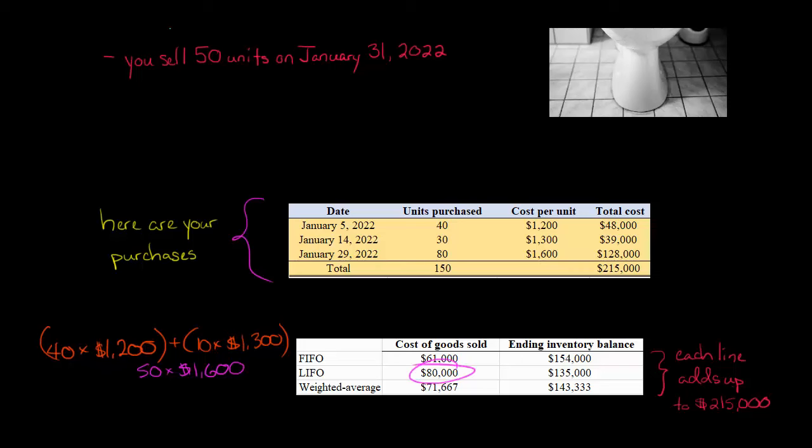Notice that cost of goods sold is higher with LIFO. It won't always be like that, but in this case, we are in a period of rising prices. It went from $1,200 to $1,300 to $1,600. When it is a period of rising prices, an inflationary environment, then the FIFO method is going to result in the lowest cost of goods sold, and thus the highest net income.